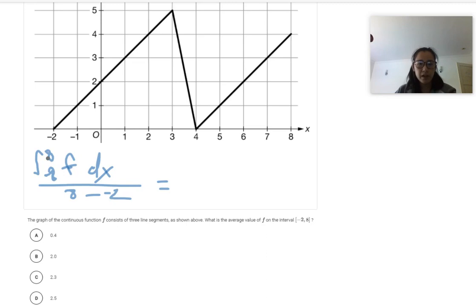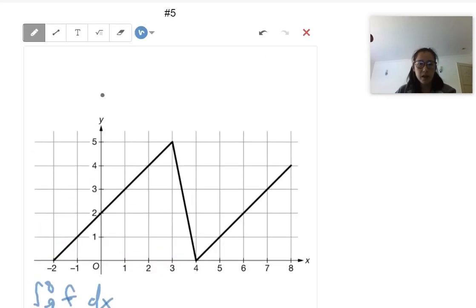So for the integral from negative two to eight, that would just be the area. So if you want to do area, that would be from negative two all the way up to eight. So all of this area right here. So those are just basically a couple of triangles.